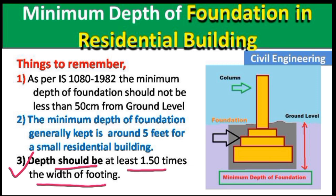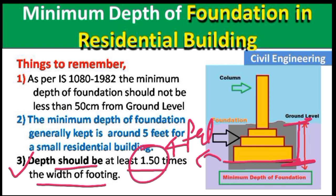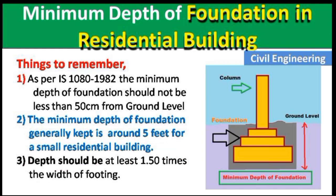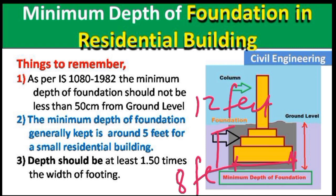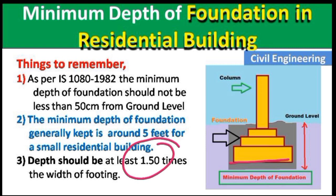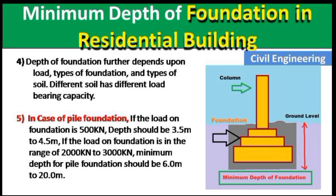Point three: the depth should be at least 1.5 times the width of the footing. For example, if the width of the footing is 4 feet, then the depth should be 1.5 × 4 = 6 feet. If the width is 8 feet, the depth should be 12 feet. Just multiply 1.5 by the width — this is the thumb rule.